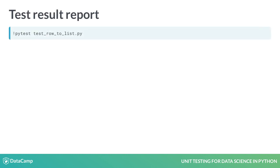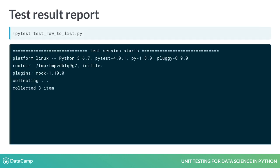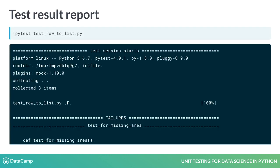Running the tests in the IPython console produces a lot of output — so much output that we had to truncate it in this slide. This is called the test result report. We will break this down into smaller pieces and understand them individually.